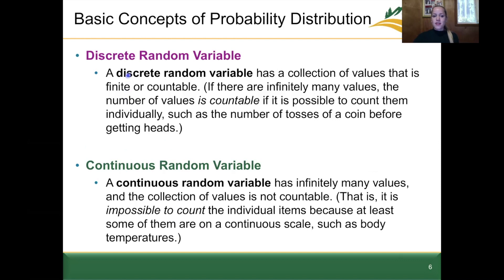For some additional definitions, we're going to go through discrete versus continuous random variables. For a discrete random variable, it's a collection of values that is finite or countable. If there are infinitely many values, the number of values is still countable if it's possible to count them individually. For example, the number of tosses of a coin before getting heads — we can still count those.